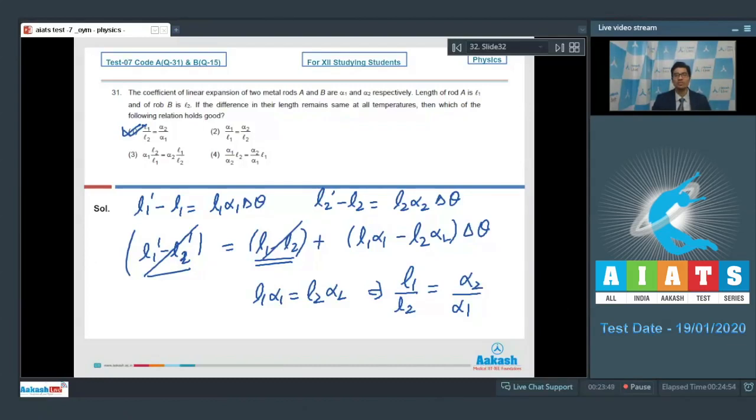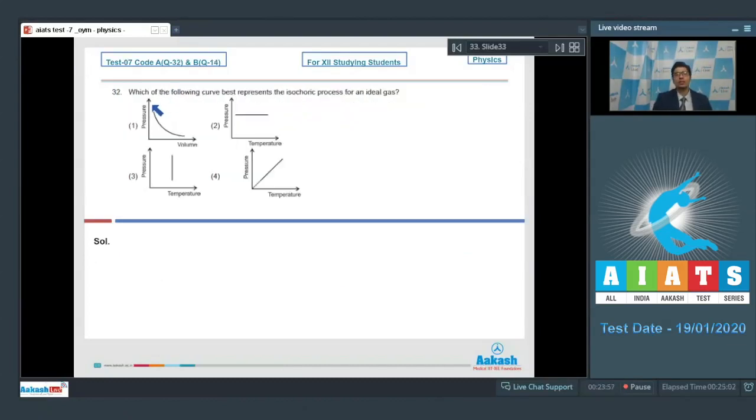Now let us proceed to question number 32. Question 32 says which of the following curve best represents the isochoric process for an ideal gas? For an ideal gas PV is equal to nRT where V is the volume. For an isochoric process V is constant which means pressure is proportional to temperature. That is, the graph between pressure and temperature is a straight line passing through origin, which means option number 4 is the correct answer.